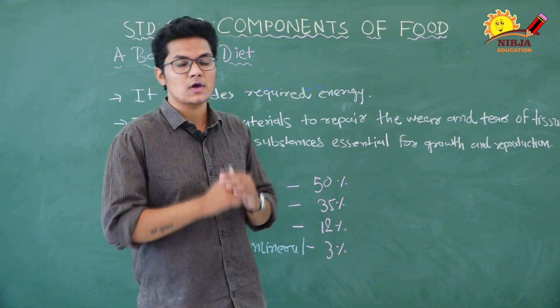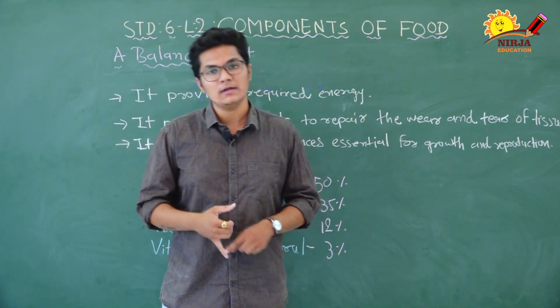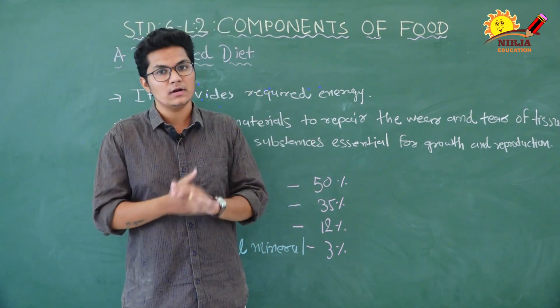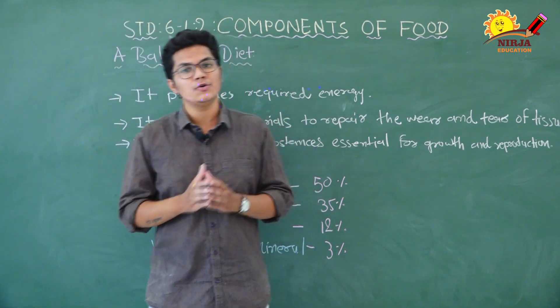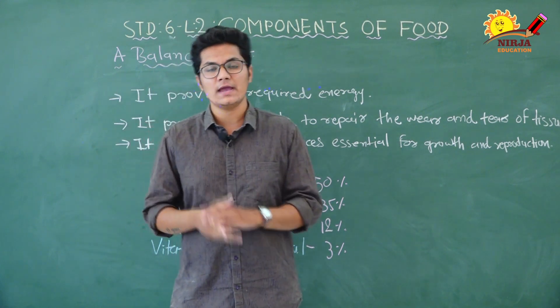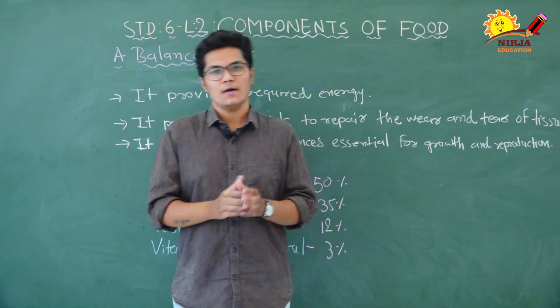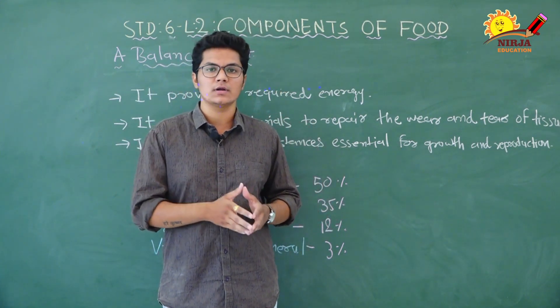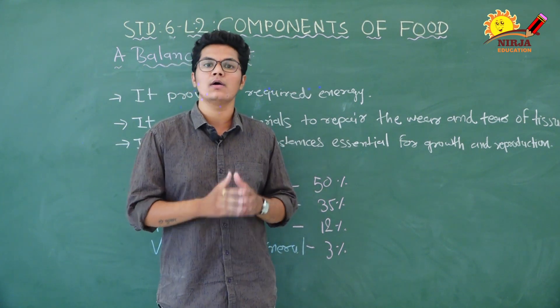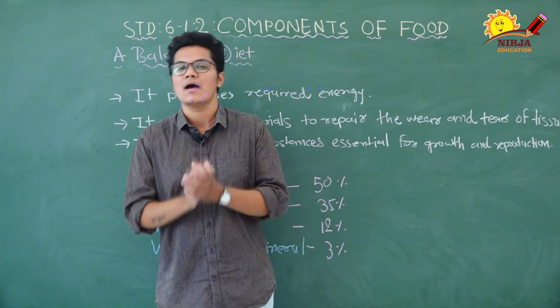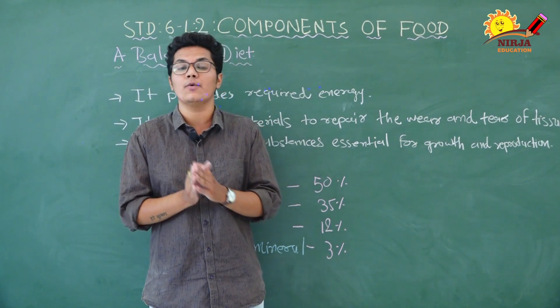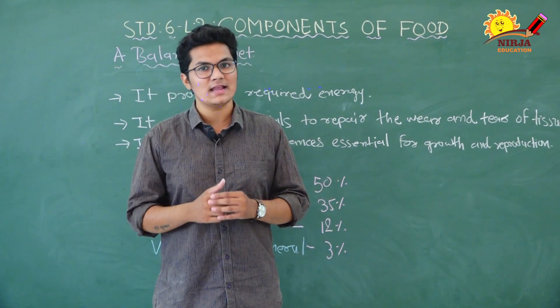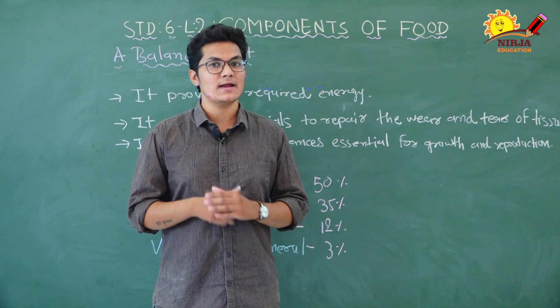We cannot get all types of nutrients from one type of food, so we should eat a variety of food items along with roughage and water. Our balanced diet should contain approximately carbohydrates 50%, fats 35%, proteins 12%, and vitamins and minerals 3%. So students, we learned about all the nutrients, water, roughage, and a balanced diet. Please subscribe to our channel and press the bell icon. Thank you.